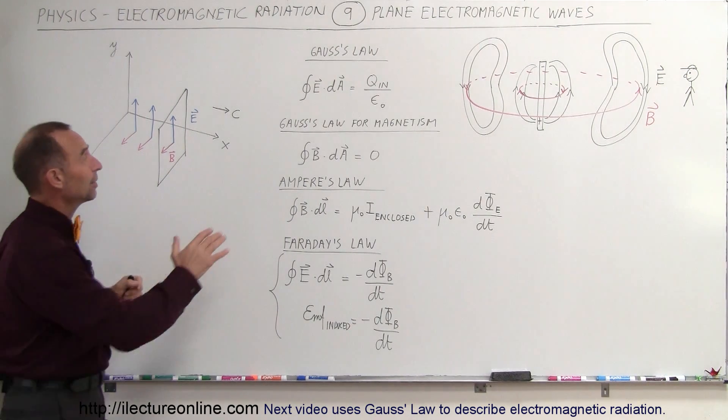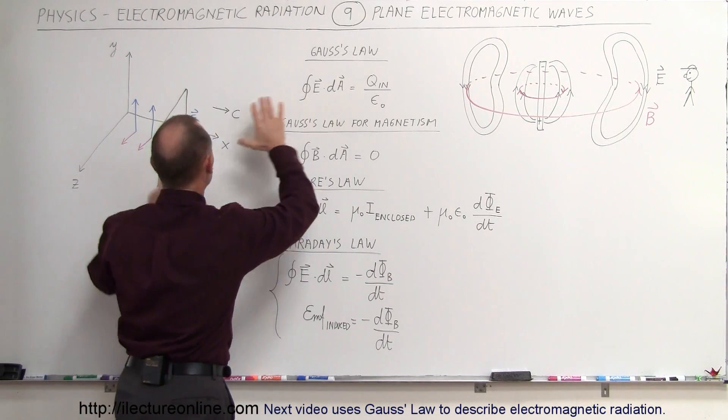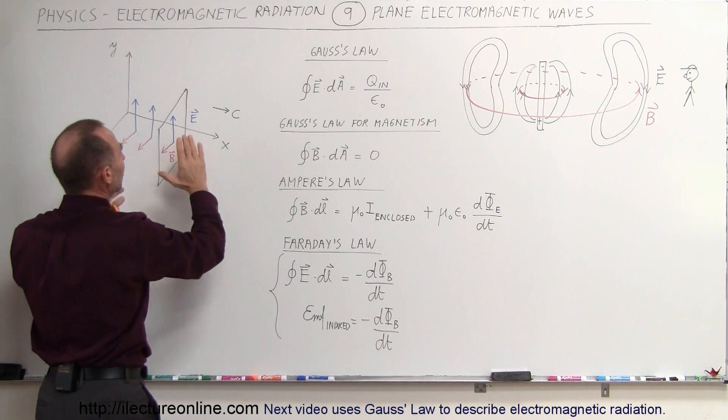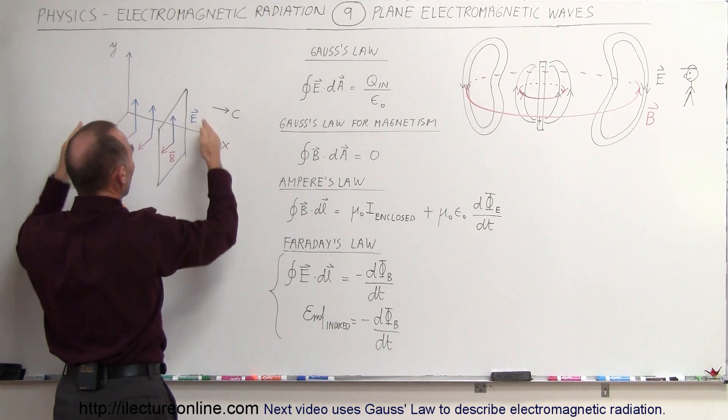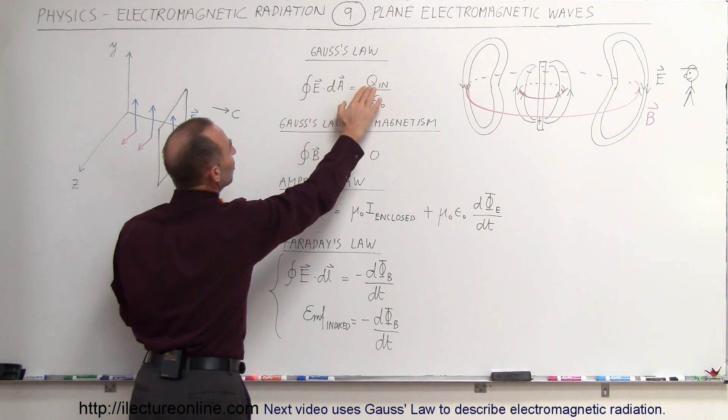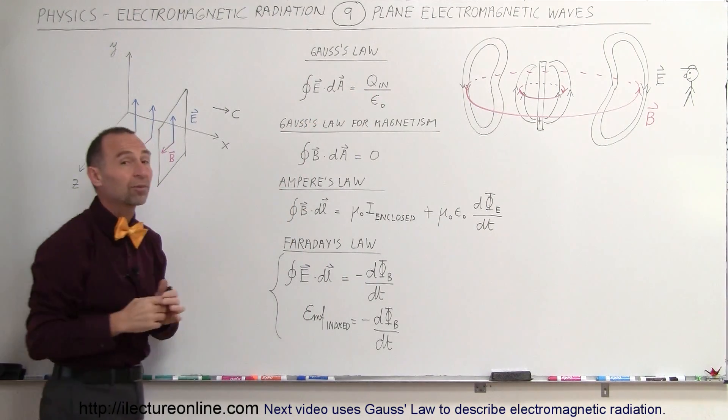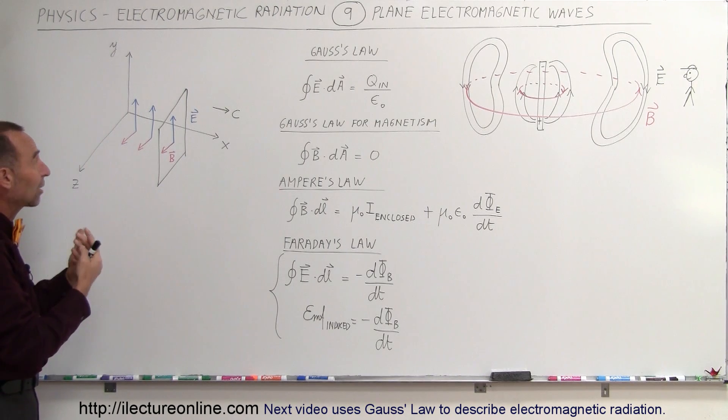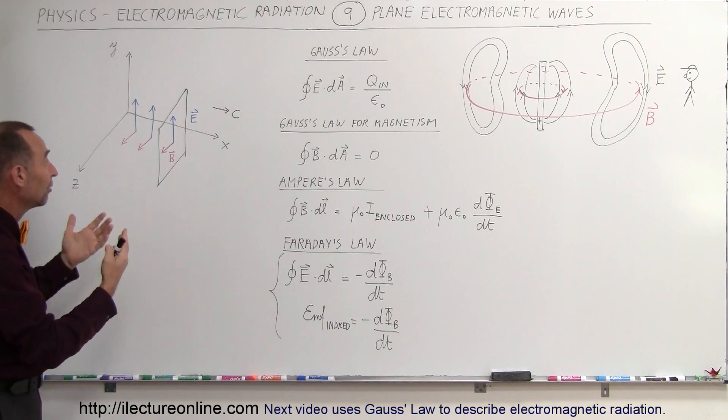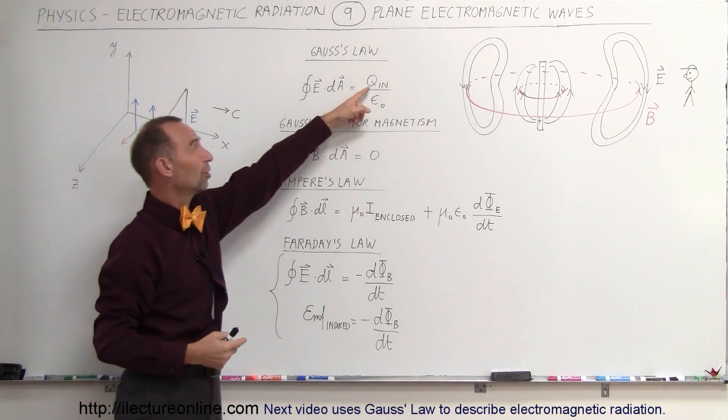So quickly reviewing here, Gauss's law says that if we draw a Gaussian surface around the wave like this, we can say that the product of electric field strength along the surface multiplied times the area of the surface will always equal to the Q inside, the charge inside, divided by epsilon sub nought. Of course, Maxwell realized that when we have electromagnetic radiation, there is no charge inside. And so therefore, you would expect this to be zero.